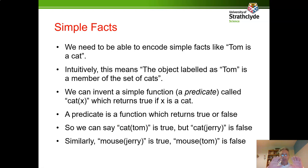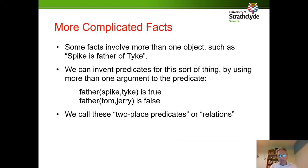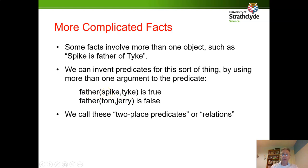Similarly, mouse(Jerry) is true because Jerry is in the set of mice, but mouse(Tom) is false. Some facts involve more than one object. We've got named objects like Tom, Jerry, Spike, Tyke — actual animals or objects. So we can relate these objects using what we call two-place predicates, or relations, because we're relating two objects. For example, father(Spike, Tyke) is true, whereas father(Tom, Jerry) is false. We've now invented one-place predicates to put things into sets, and two-place predicates to relate objects.